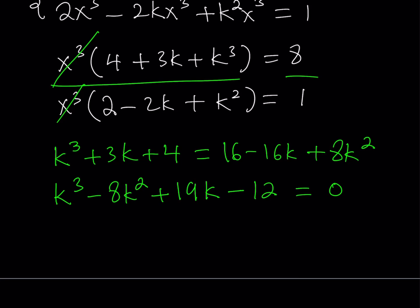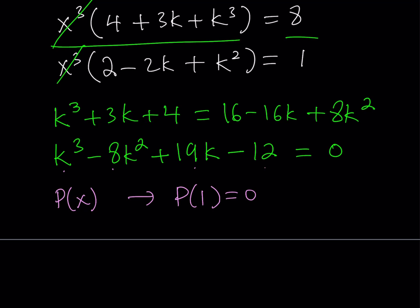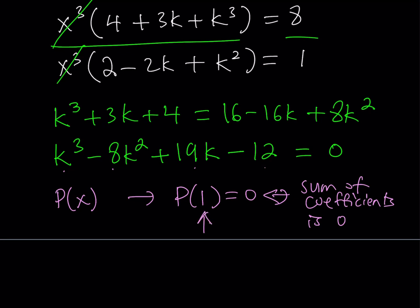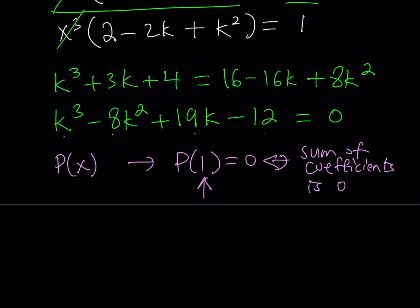But this is a special type of equation. If you carefully look at the coefficients, the sum of the coefficients is 0. The positive ones: 1 + 19 = 20, and the negative ones: -8 + (-12) = -20, so the total sum is 0. This means k = 1 is a solution, because P(1) = 0 means the sum of coefficients equals zero, which means 1 is a root.